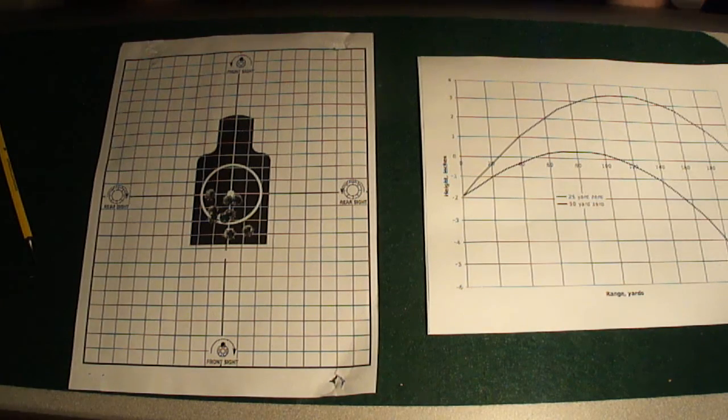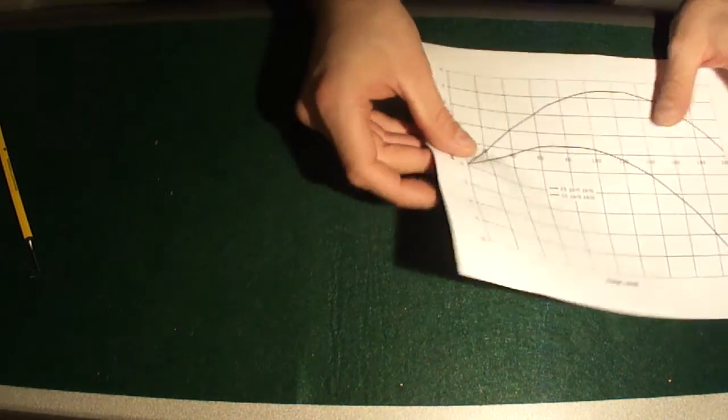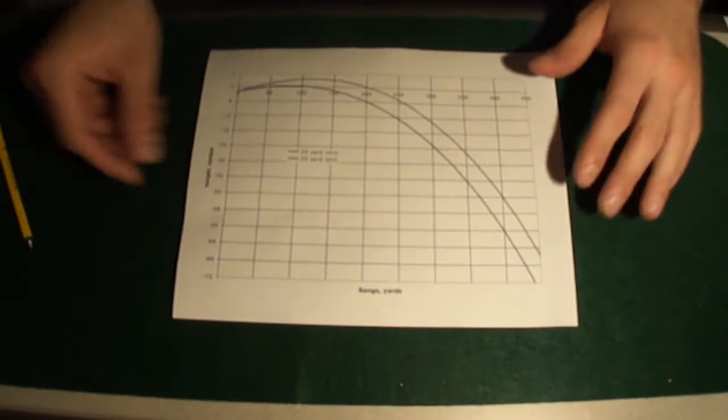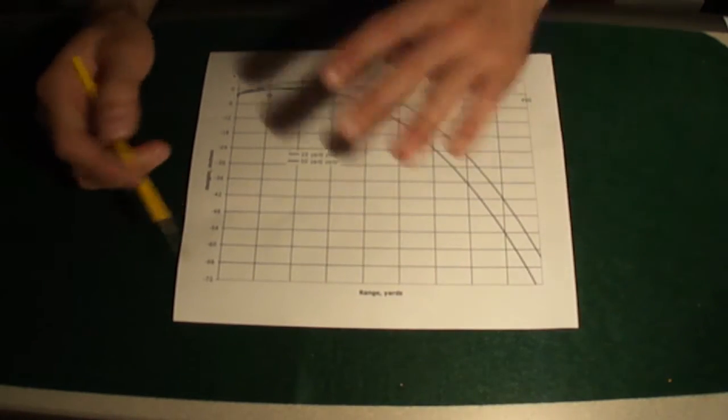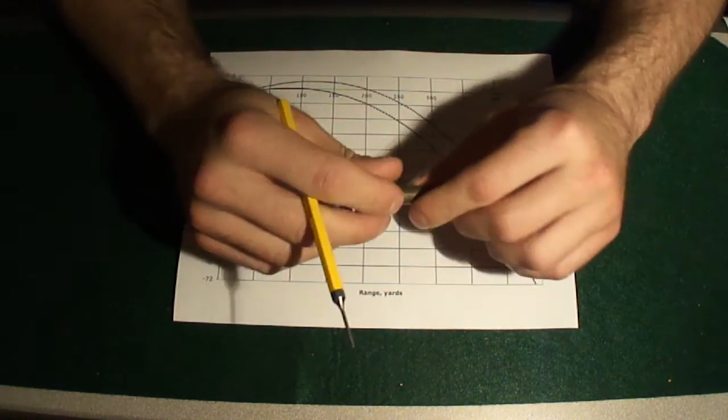So what you want to do is you want to first of all sight a weapon, and I'll go into this in a second, but depending on the ballistics, you want to take a look at this chart. Let's start with this one. And you want to take a look at where you want to be, so it's obviously going to vary for the type of bullet, the grain of the bullet, the speed of the bullet,